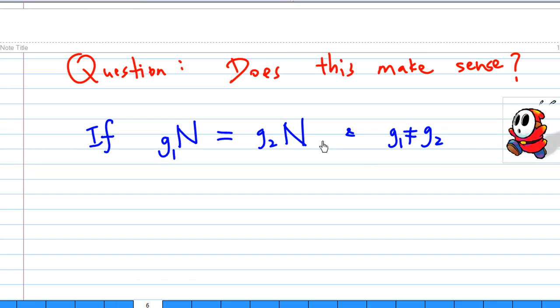The question we are going to ask is, does this make sense? Because it is possible that for two left cosets of N, say g1N and g2N are equal, but g1 not equal to g2.